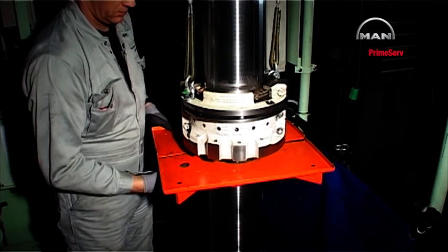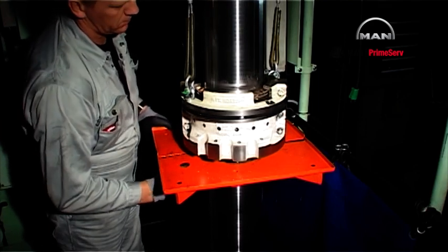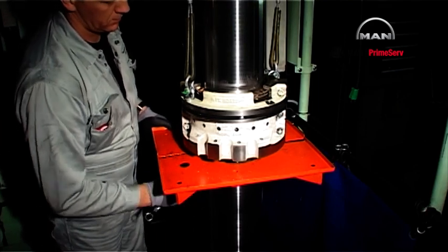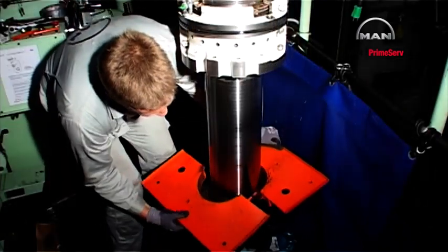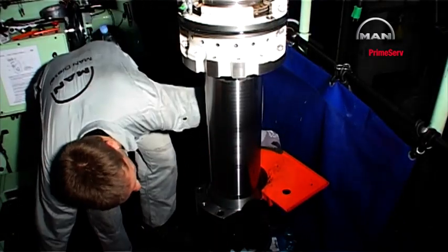Lift the stuffing box a little. Remove the working table from the piston rod.